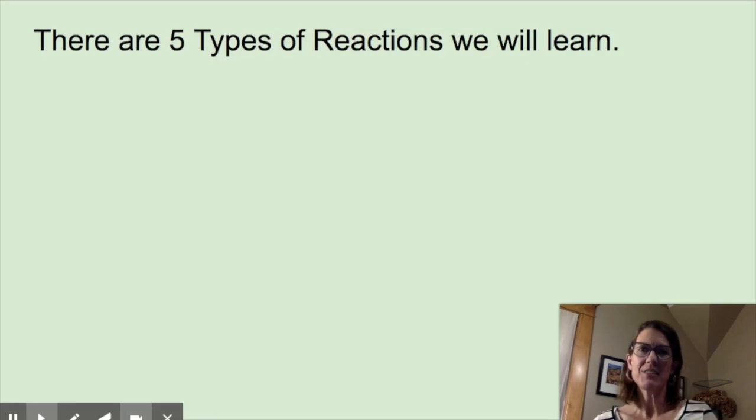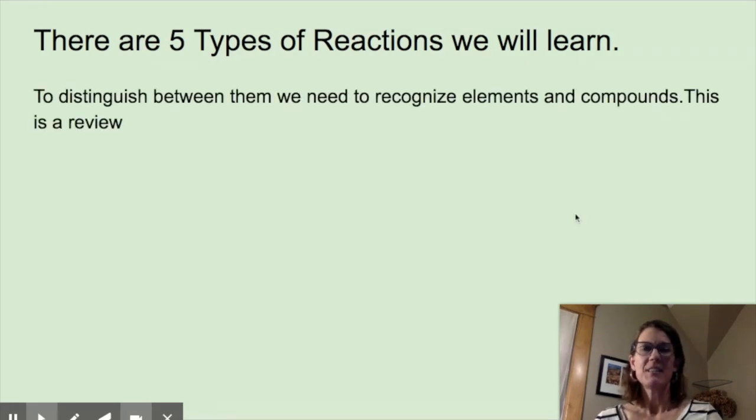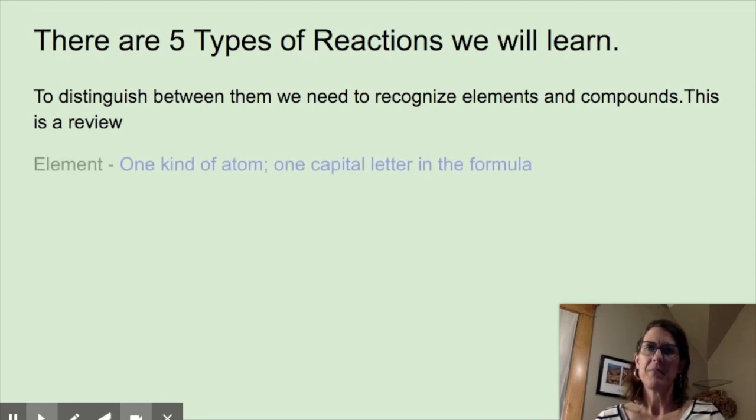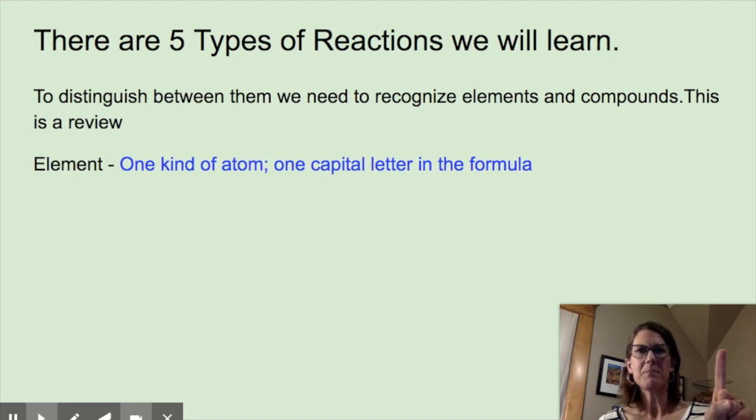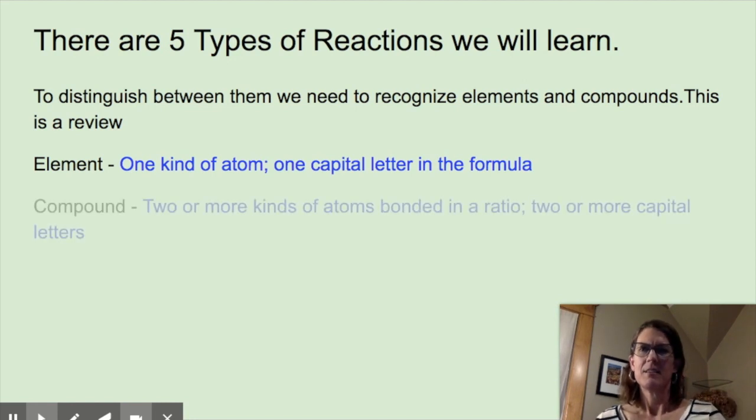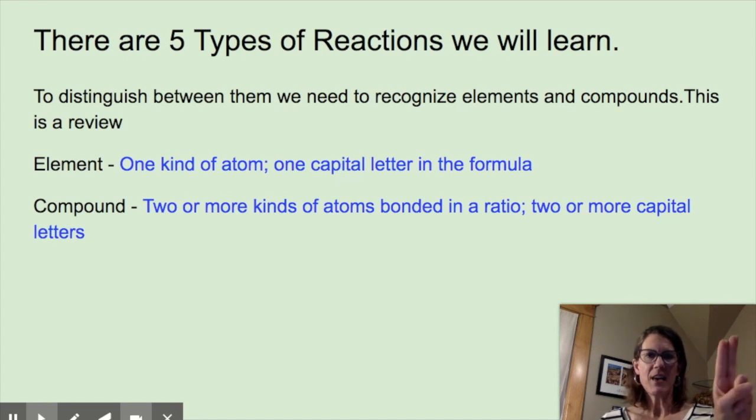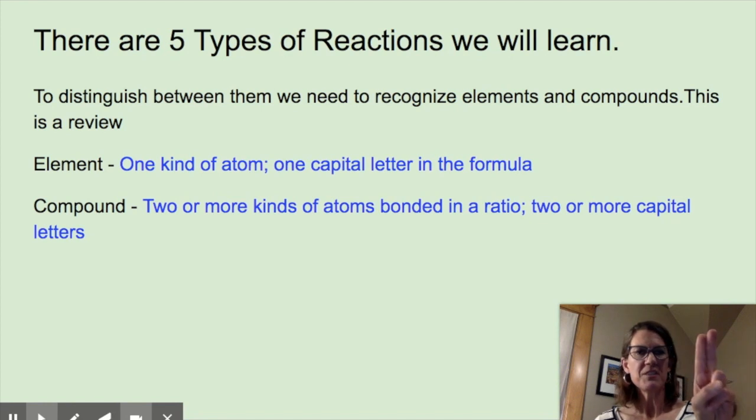There are five types of reactions we will learn. To distinguish between them, we need to recognize elements and compounds. This is a review. An element is one kind of atom. There's one capital letter in the formula. We're going to show an element with our hands with just one finger for that one capital letter or that one kind of atom. A compound is two or more kinds of atoms bonded in a ratio. Two or more capital letters. So we're going to show a compound with two fingers or two fingers together like this sometimes.